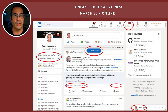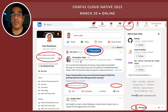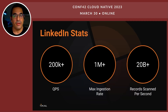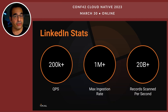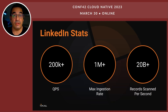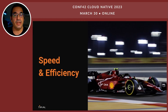If you go on LinkedIn today, you might see all the queries being sent to Apache Pinot at any given time. Just on one page, there are seven queries, which are being run for each user with sub-second latency. Some statistics: LinkedIn runs 200,000 queries per second, has a max ingestion rate of about 1 million events per second, and scans about 20 billion records per second when querying. Apache Pinot is a database built for speed and efficiency.